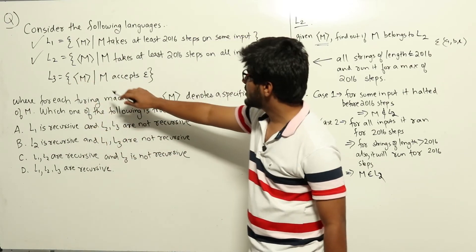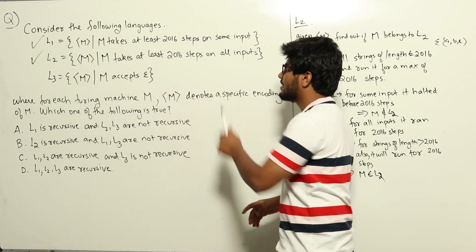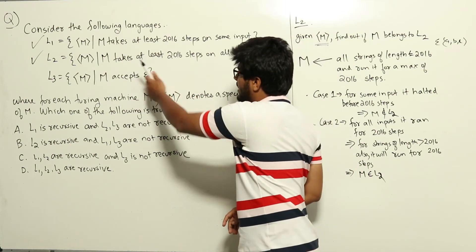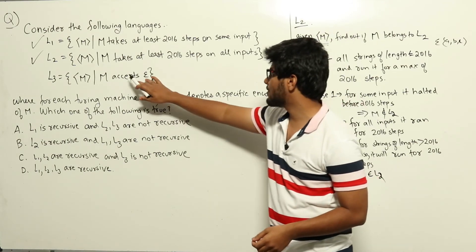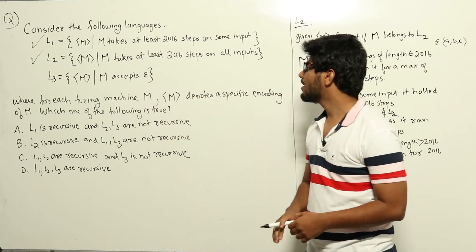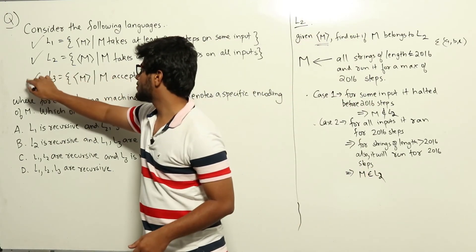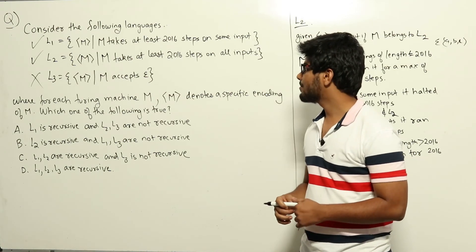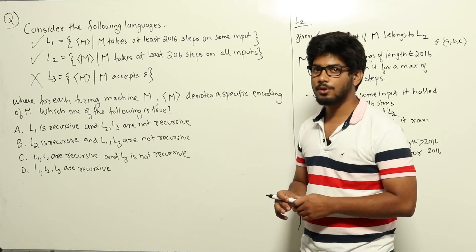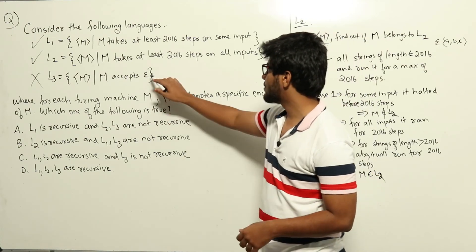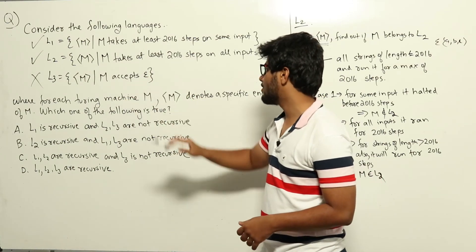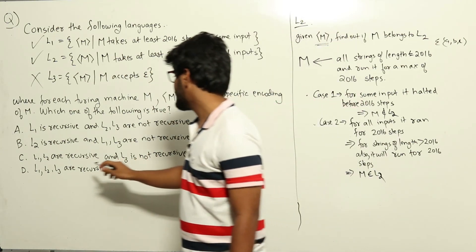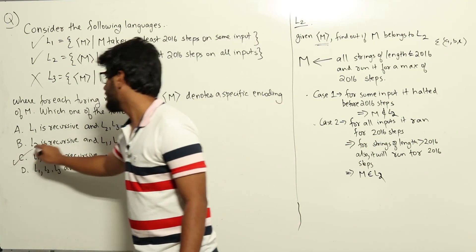Now looking at L3: it is the set of all Turing machines that accept epsilon. Given a Turing machine M with epsilon as input, that Turing machine may run for an infinite amount of time — it can go into an infinite loop. We cannot decide whether M will accept epsilon or not. So L3 is not recursive. Therefore, only L1 and L2 are recursive, and the answer is option C.